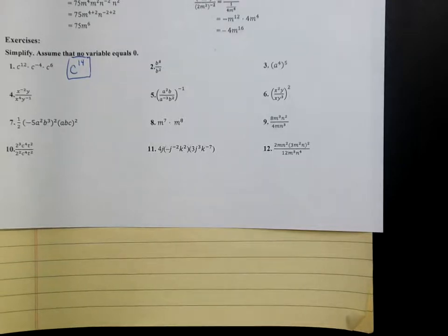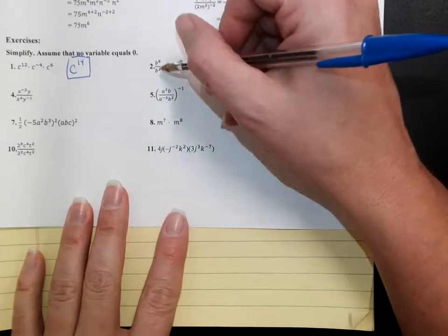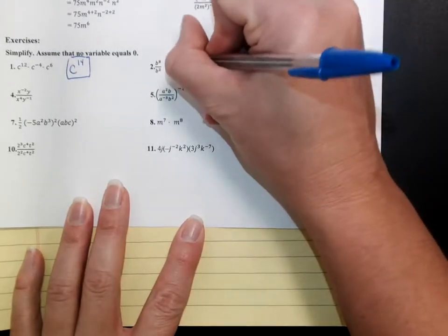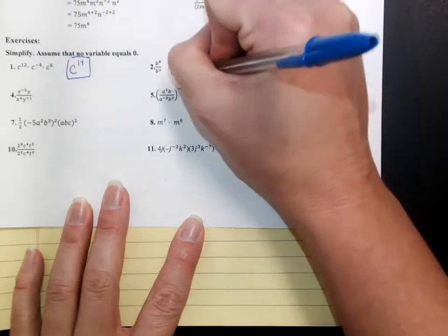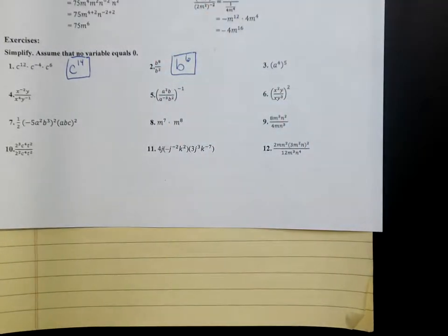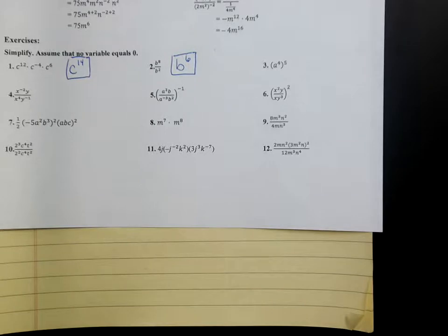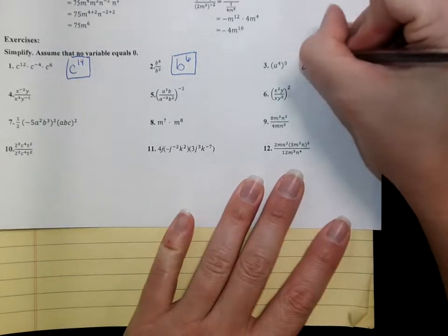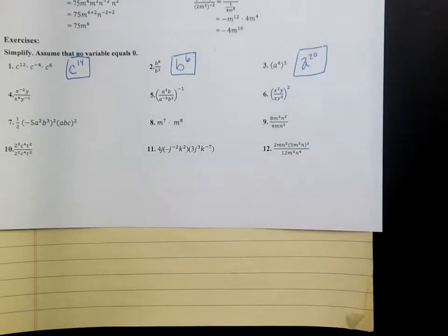Same thing on number 2. Remember when you divide, you subtract your exponents. So 8 minus 2 — hope you didn't say 4 — that's B to the 6th power. Same thing on number 3: A to the 4th power to the 5th power — what do you do with your exponents there? You multiply. So that's going to be A to the 20th, and that's your answer.